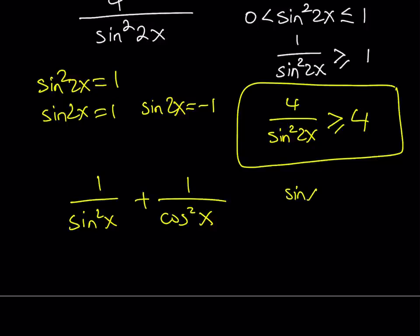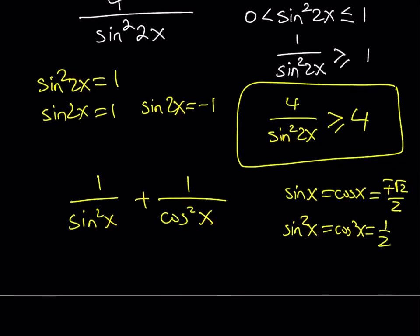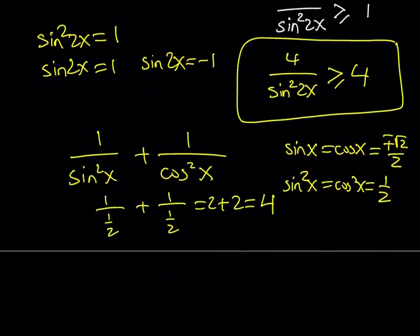So here if sine x equals cosine x and they're both equal to plus minus square root of 2 over 2, then their squares is going to be equal of course. And that is going to imply that they're both equal to 1 half. And then when you flip the 1 half, 1 over 1 half plus 1 over 1 half is going to be 2 plus 2. And that is going to show us that the value of 4 is actually attainable.